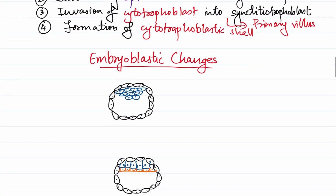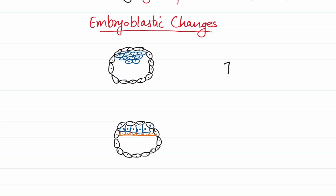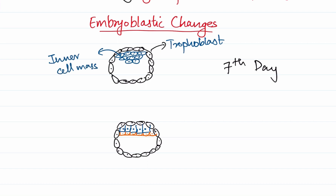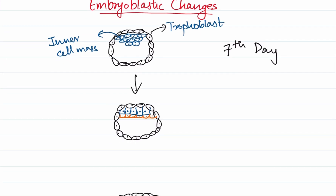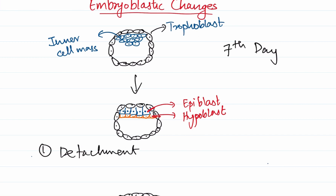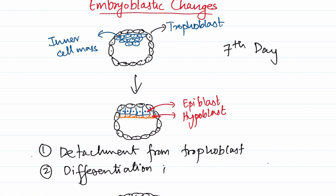Now let's check what happens with the embryoblast. At the time of implantation — the seventh day of life — we had an outer trophoblast and an inner cell mass. This inner cell mass will differentiate into two layers: the embryoblast detaches from the trophoblast and differentiates into an epiblastic layer and a hypoblastic layer. The first event is the detachment from the trophoblast, and the next is the differentiation of the embryoblast into hypoblast and epiblast.